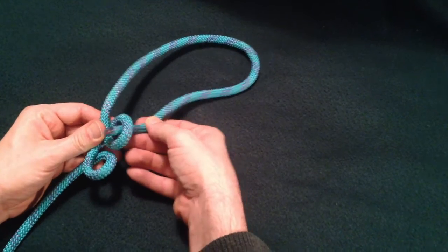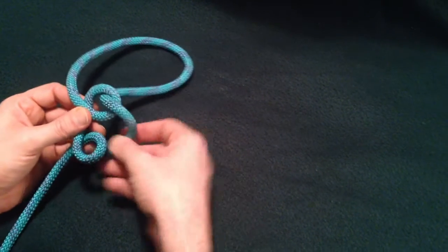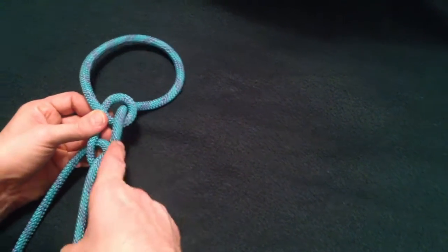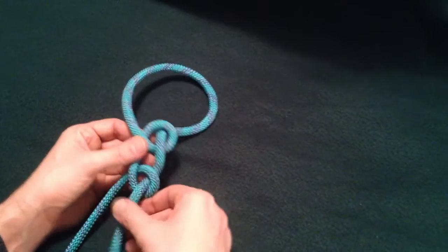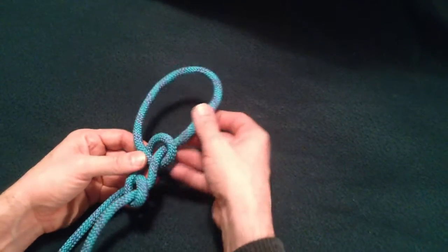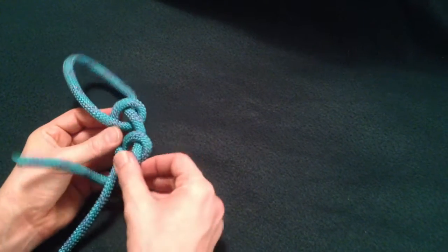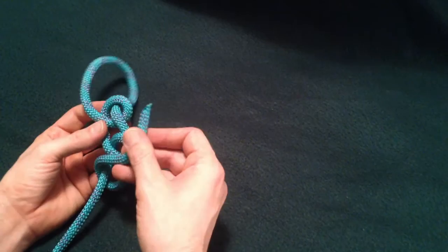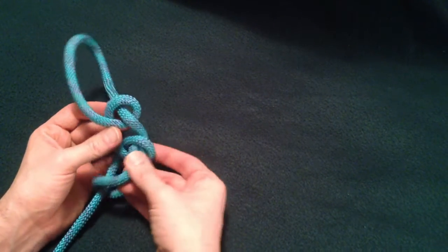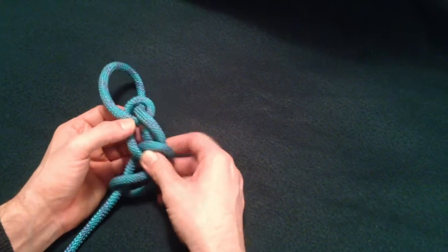We'll come underneath both loops. With a regular bowline, there would only be one loop, and you would come underneath the one loop. With the water bowline, you come under and through both loops, under the standing part of the line. Then go over top of both loops.